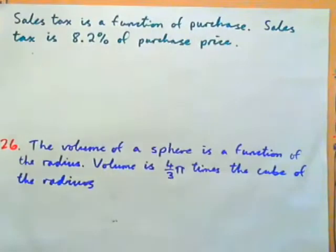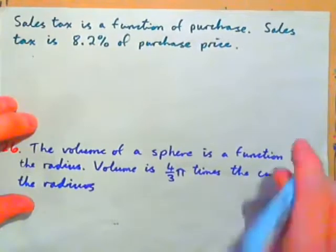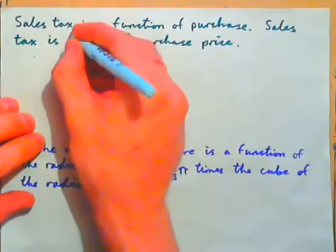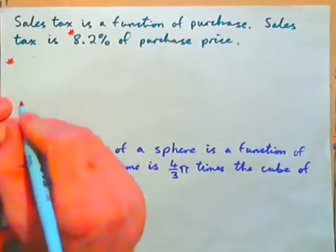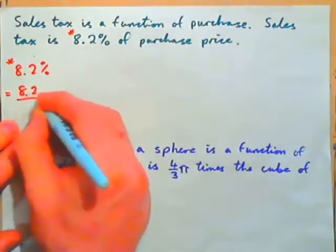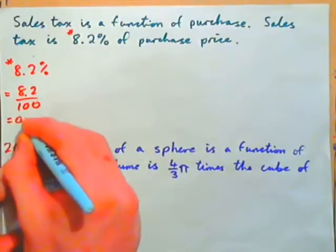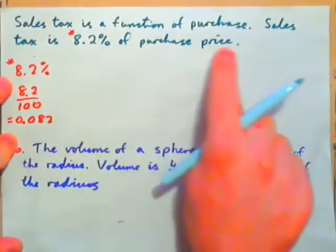Let's have a look at this example. Sales tax is a function of purchase. Sales tax is 8.2% of purchase price. We have to turn that sentence into an equation using function notation. First trick, take this percentage and turn it into a decimal. 8.2% is 8.2 per 100 divided by 100 or 0.082.